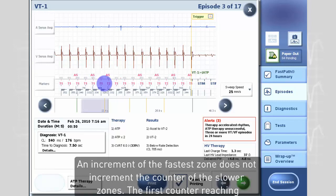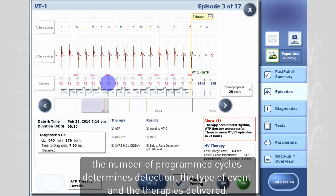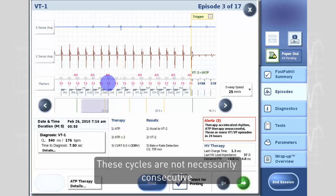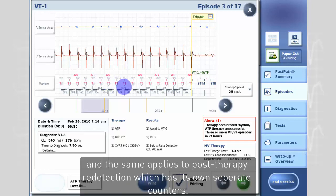An increment of the fastest zone does not increment the counter of the slower zones. The first counter reaching the number of programmed cycles determines detection, the type of event, and the therapy is delivered. These cycles are not necessarily consecutive, and the same applies to post-therapy redetection, which has its own separate counters.